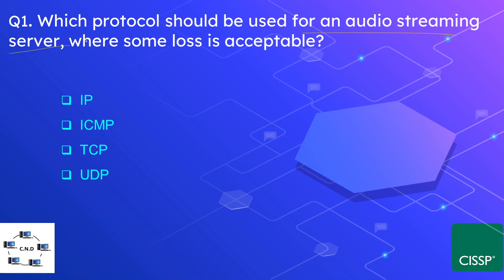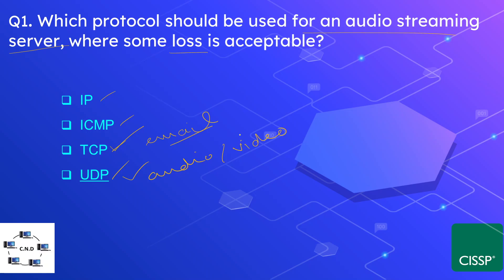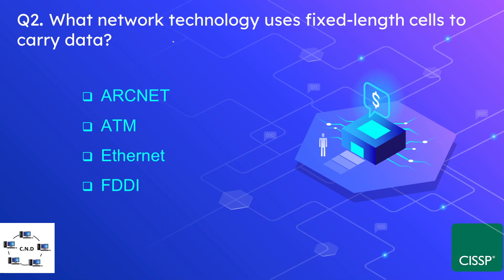The options are IP, ICMP, TCP, and UDP, and the correct answer is UDP. UDP is used for applications where high speed is required but some data loss is acceptable. TCP, on the other hand, is used for applications where no loss is acceptable, such as email communication. In audio and video streaming, we can accept some form of packet loss.